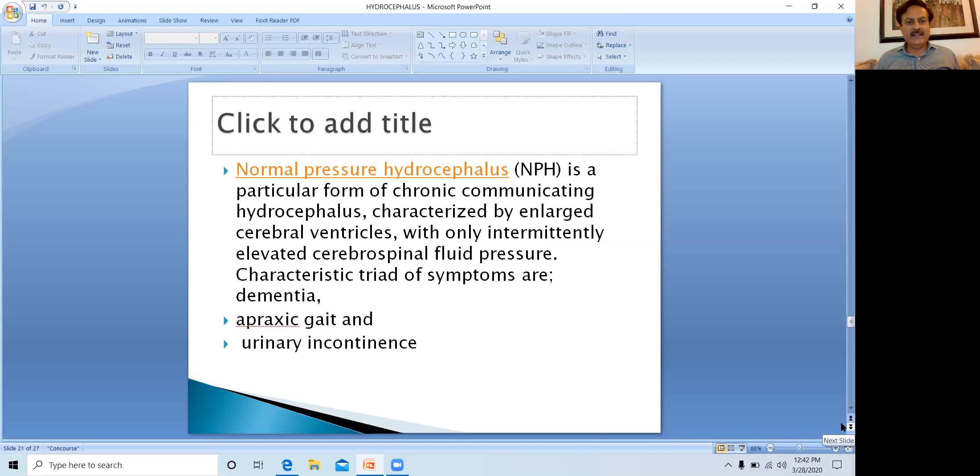Normal pressure hydrocephalus is a particular form of chronic communicating hydrocephalus characterized by enlarged cerebral ventricles, but the pressure is not increased with only intermittently elevated cerebrospinal fluid pressure. The pressure is normal but ventricles are enlarged. The typical characteristic triad includes dementia with memory loss, gait apraxia where the gait is not stable, and urinary incontinence. These are characteristic features of normal pressure hydrocephalus.